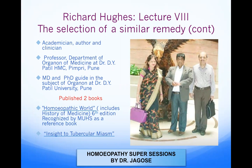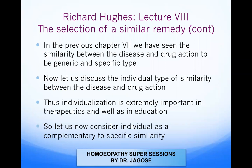In the previous Chapter Seven we have seen the similarity between the disease and drug action to be generic and specific type. The action of the drug can either be a generic type, related to the general symptoms, or a specific type, related to the characteristics of the PQRS symptoms. Now let us discuss the individual type of similarity between the disease and the drug action.